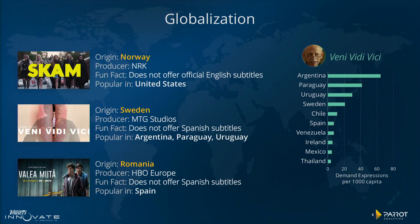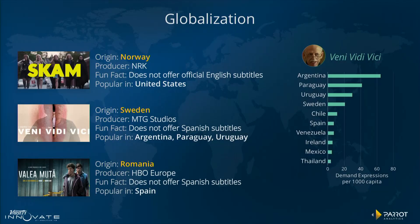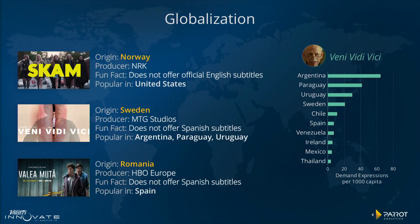Three quick examples to highlight the globalization of content — we measured demand for content in places where it wasn't designed for. Skam, a Norwegian original TV show, doesn't offer English subtitles, yet we measured high demand for it in the US. Veni Vervici, a Swedish show, doesn't offer Spanish subtitles, yet we measure high demand for it in Spanish-speaking countries where the show doesn't even air. Valaia Muta, a Romanian production by HBO Europe, doesn't have Spanish subtitles, yet it's popular in Spain. The world is becoming increasingly globalized — audiences are finding this content, consuming it, and creating their own subtitles for it.